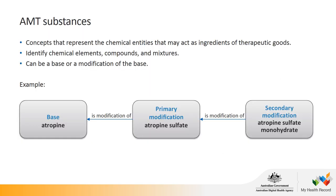Before we talk about products, let's talk about AMT substances. Substances represent the chemical entities that may act as ingredients of therapeutic goods — they may be chemical elements, compounds and mixtures, and can be a base or modification of the base. An example is atropine as the base, atropine sulfate as a primary modification, and atropine sulfate monohydrate as a secondary modification contained within the model.